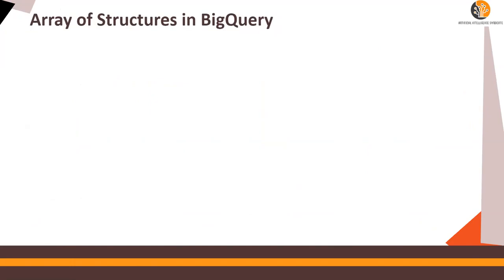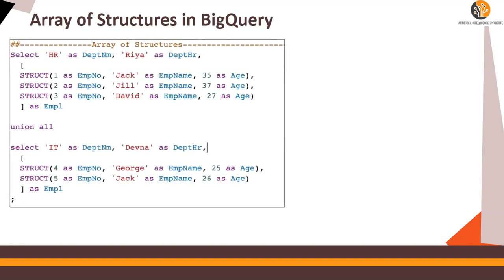You can have structures of arrays and arrays of structures — we are going to see both of them. It's a little complex but you'll get it very soon. This is an array of structures: using square braces you define the array. Remember we had union of arrays in the previous video, and here I'm using the keyword STRUCT.